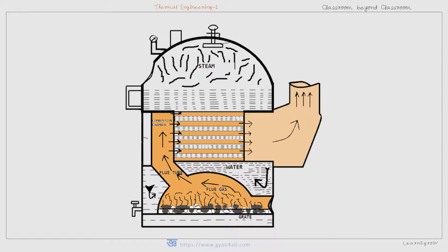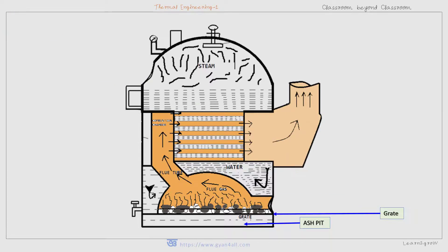As a student of thermal engineering, from the examination point of view, you may have to draw a schematic diagram of a Cochrane boiler, label the different parts, and explain the working principle. The main parts to label include: the ash pit below the grate, the grate which is the platform for burning solid fuel, and the fire door through which solid fuel is fed into the furnace.